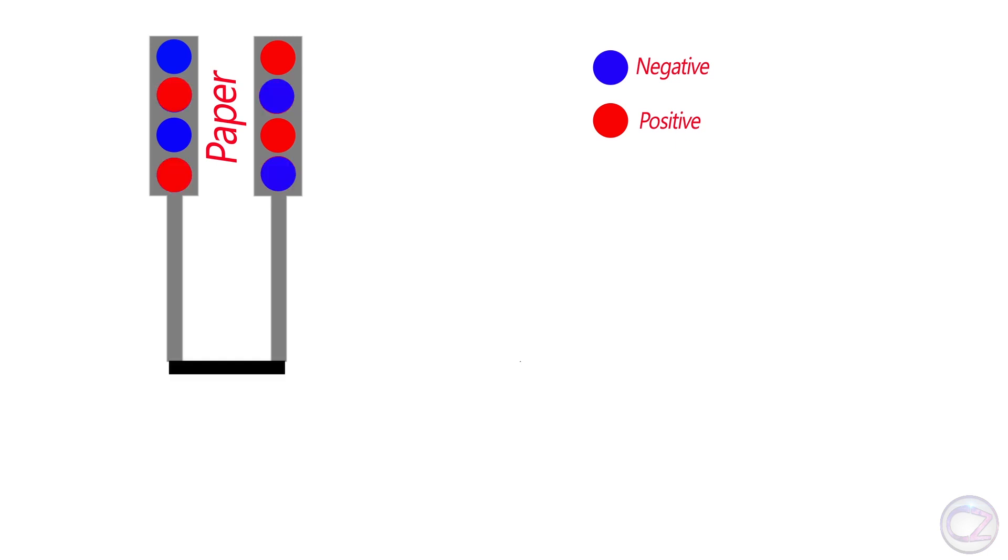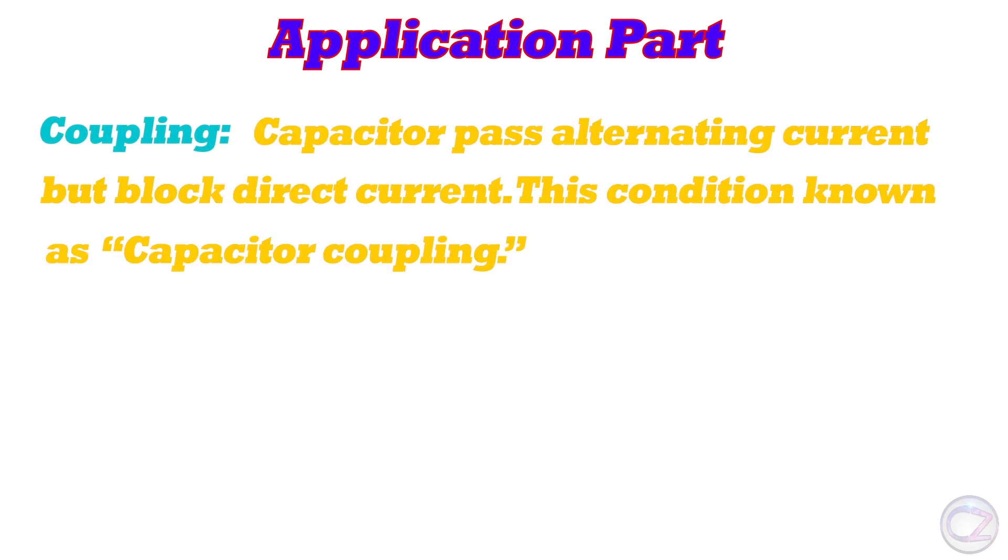Now, application part of capacitor. Coupling: capacitor passes alternating current, I mean AC current, but blocks DC. This condition is known as capacitor coupling. Another thing is, capacitor can stabilize input voltage. By using a capacitor, if you input 5 volts, then you get 5 volts output, not even 4.99 volts.